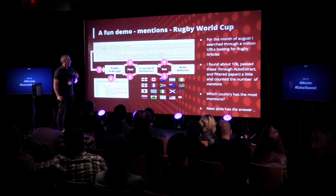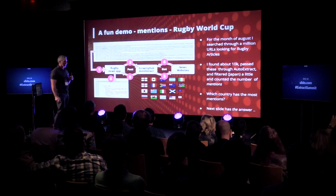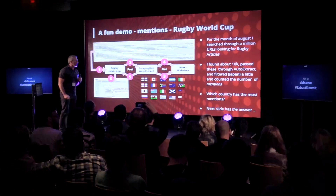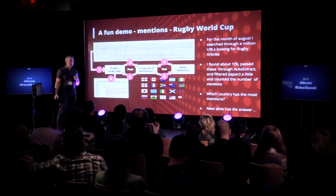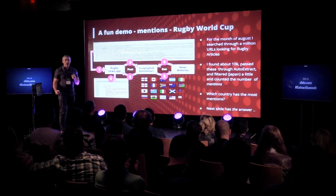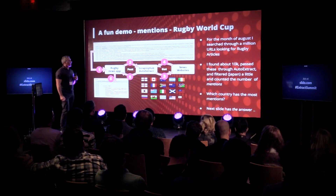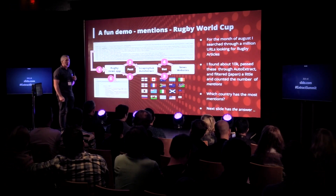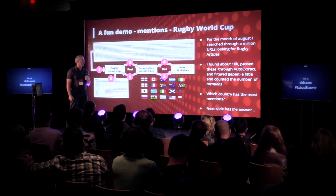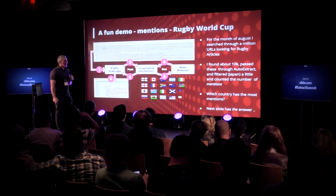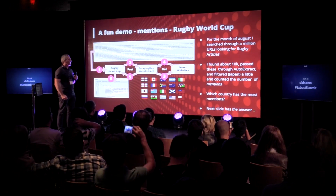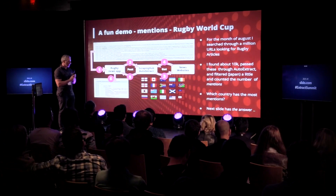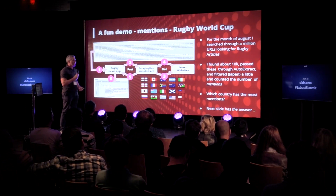Before we start, I thought it would be good to have a demo of one of the fun things you can do with the API. For those who are not rugby fans, the Rugby World Cup starts next week in Japan, and for the first time ever Ireland is ranked the number one team. I thought it would be fun to pull out a bunch of URLs from August news to see which country is getting the most mentions. I took a million news URLs, passed them through the API, and found approximately 10,000 of those URLs had what I would qualify as rugby news.